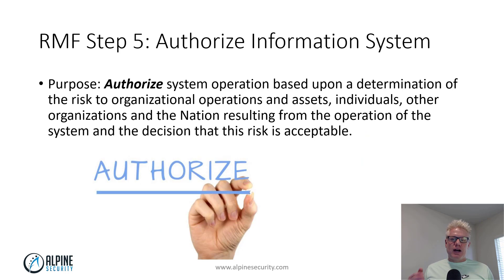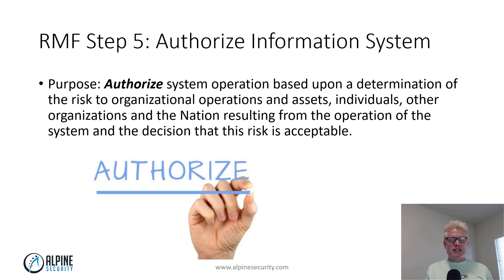The next step, step five, is to authorize the information system. When we've gone through the first four steps, we know the controls are working properly because we've assessed them. Now somebody with the right authority has to make the decision to authorize the system to operate in a normal environment — they are formally accepting the risk for the system.